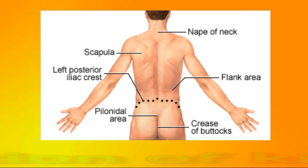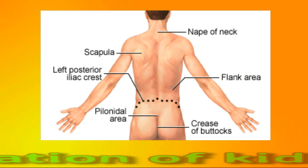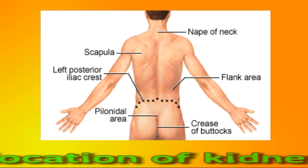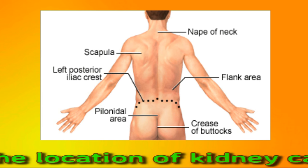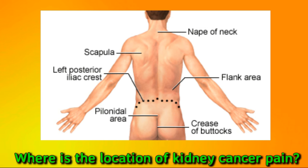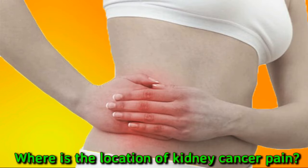Kidney cancer pain usually develops in the lower back or the flanks. The flanks are between the hips and ribs on both sides of the body. The pain may develop on one side of the body and it may not go away. Kidney cancer can also cause sharp pain in the abdomen and groin area.